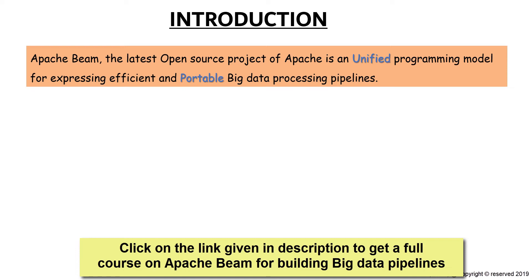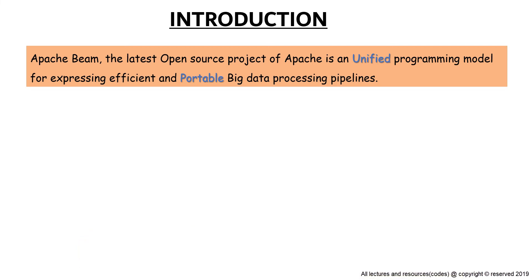Talking about unified — in this era we have a lot of different use cases in a common data processing paradigm. We do batch processing, in which we process very big files usually containing old data. Then we have stream processing, which processes real-time streaming data, for example Twitter data, data from IoT devices, sensors, stock data, etc.